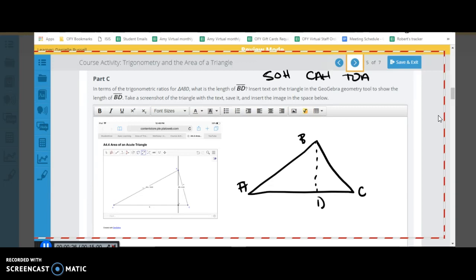This is sine equals opposite over hypotenuse. Cosine equals adjacent over hypotenuse, and tangent equals the opposite over the adjacent. So we want to say we're trying to find the length of BD here.